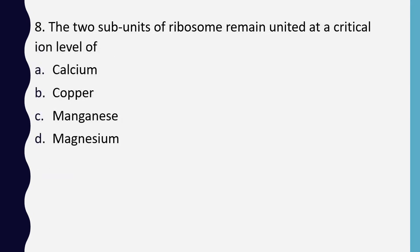Question 8. The two subunits of ribosomes remain united at a critical ion level of: calcium, copper, manganese, or magnesium. Correct answer is option D: magnesium ion.